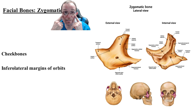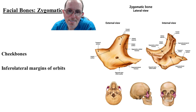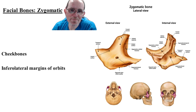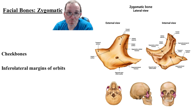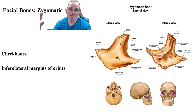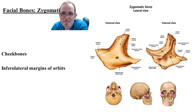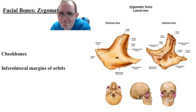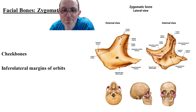The zygomatic bones are your cheek bones. The part of the zygomatic bone that attaches to the temporal bone is called the temporal process of the zygomatic. There's also a piece coming from the temporal bone called the zygomatic process of the temporal bone. Together, these form the zygomatic arch. These bones form part of the outer rim of the orbit, but mainly they are our cheek bones.